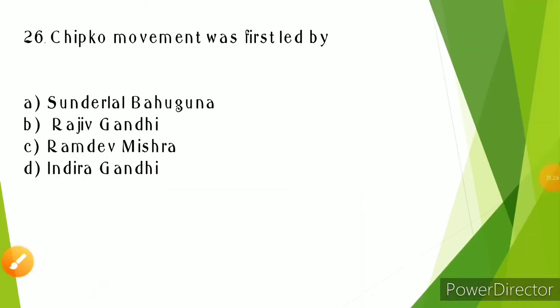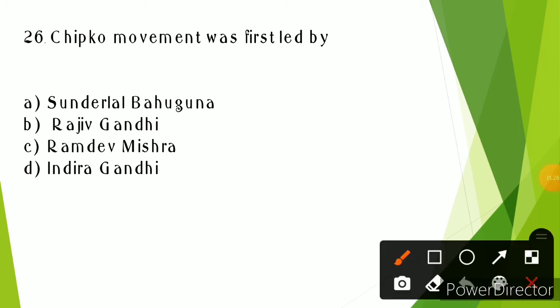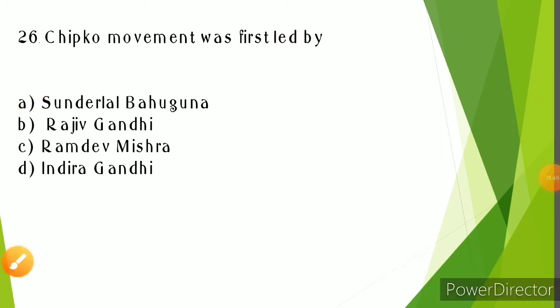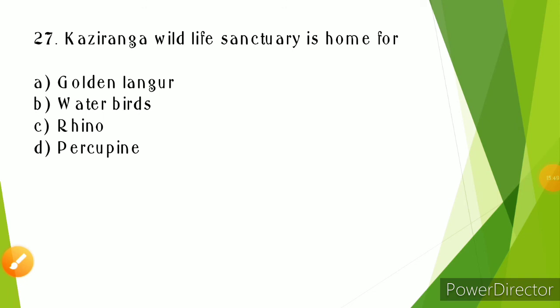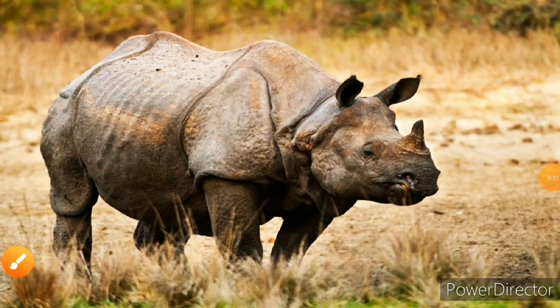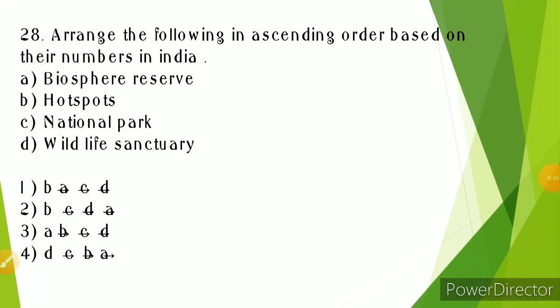The Chipko movement was first led by Sundar Lal Bahuguna. The Chipko movement is for the conservation of forests and trees. Kaziranga Wildlife Sanctuary is home for one-horned rhino. You can see the picture of one-horned rhino.